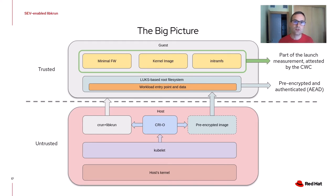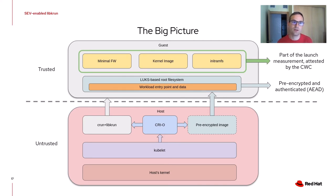There are a couple of things worth highlighting about this big picture. First, the untrusted part is very similar to what you'd see on an application node running a regular container, both in the number of components and the execution workflow. In fact, the execution workflow is preserved until the very last stage, where CRUN — after setting up the environment — uses libkrun to start the VM containing the confidential workload, and everything else is largely preserved. We are also adding only a small number of components, which are small in code size and tightly coupled and self-contained. The combination of both means this is the least disruptive option for enabling an application node to run confidential workloads.